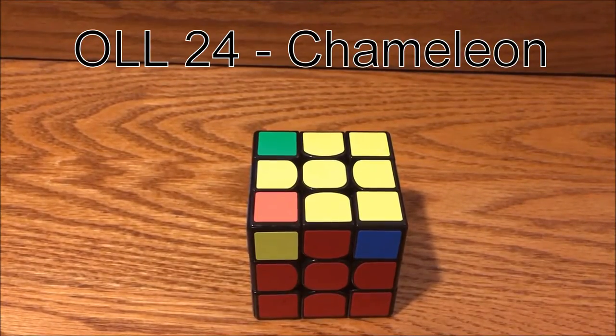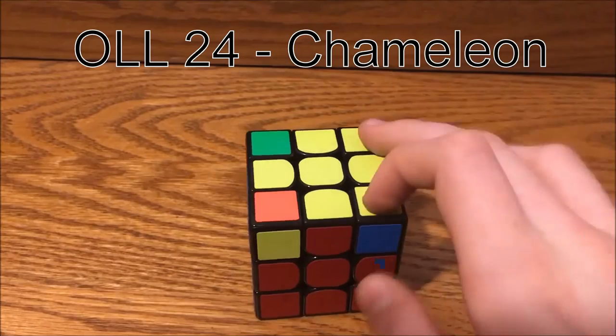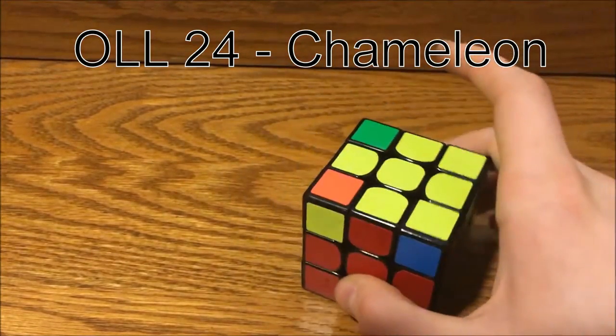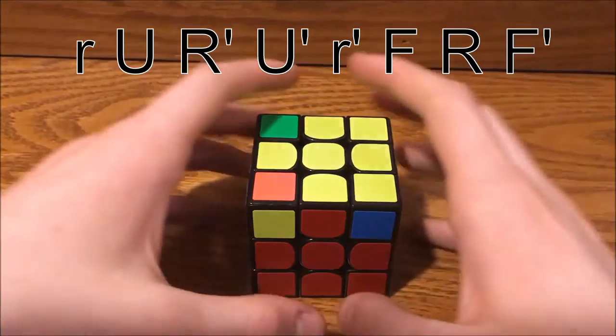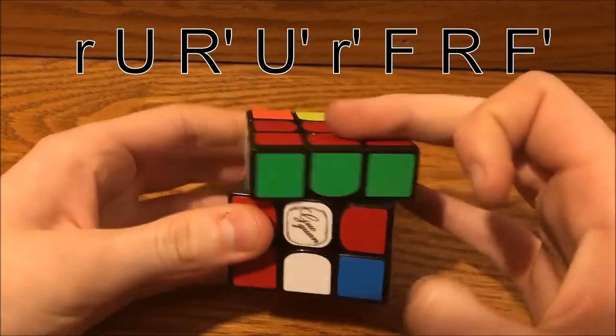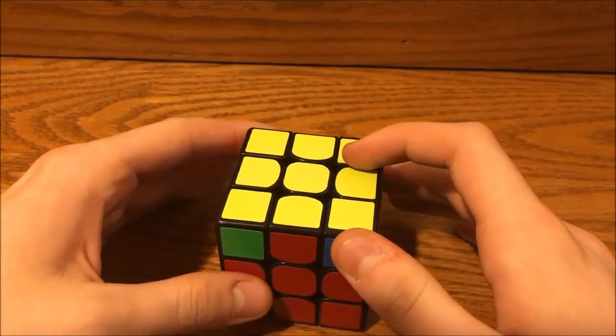The first of the two corners up cases is this case with these two corners up and these two corners opposite each other. Here's the algorithm to solve it. And here it is fast.